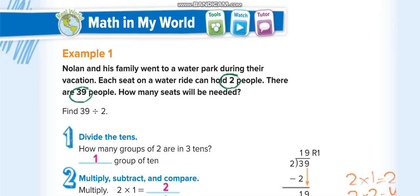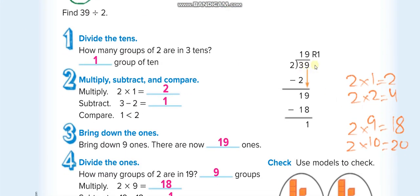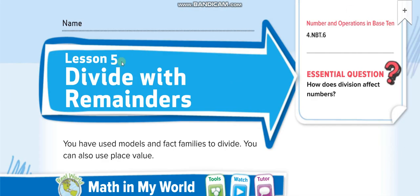Just as a revision guys, you know that the number inside the division sign is the dividend, this one outside, 2, is the divisor, the answer is the quotient, and the remainder R1, R means the remainder, comes from here. So in this lesson, we are going to divide with remainders.